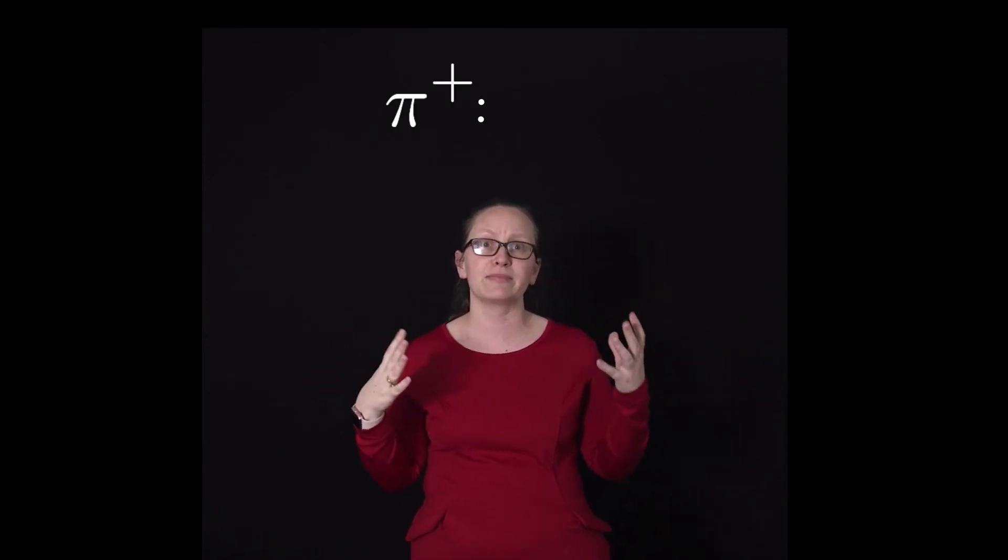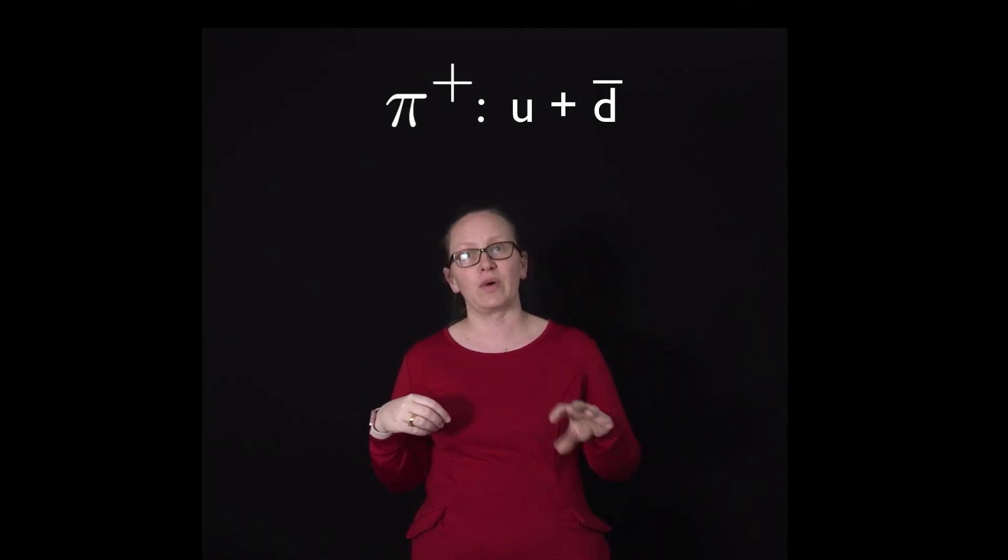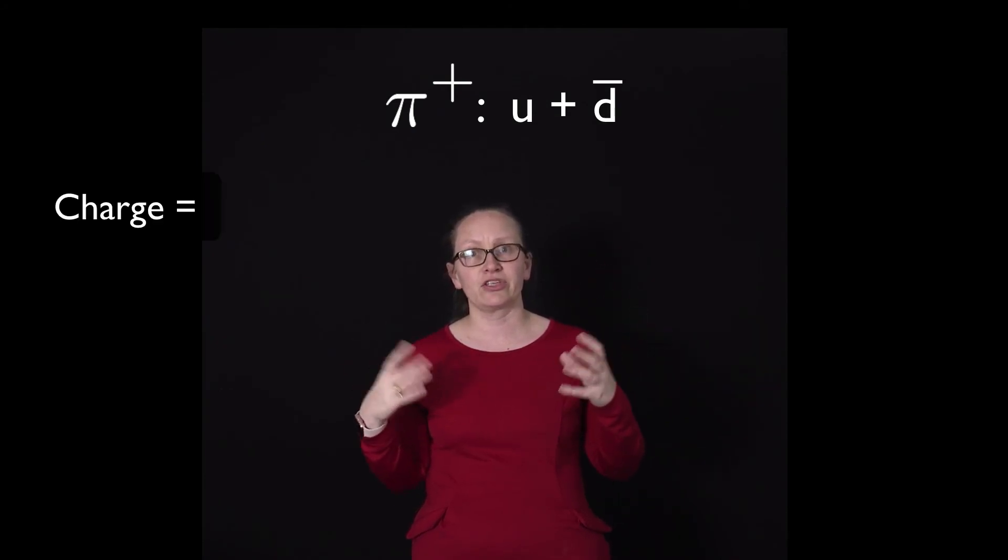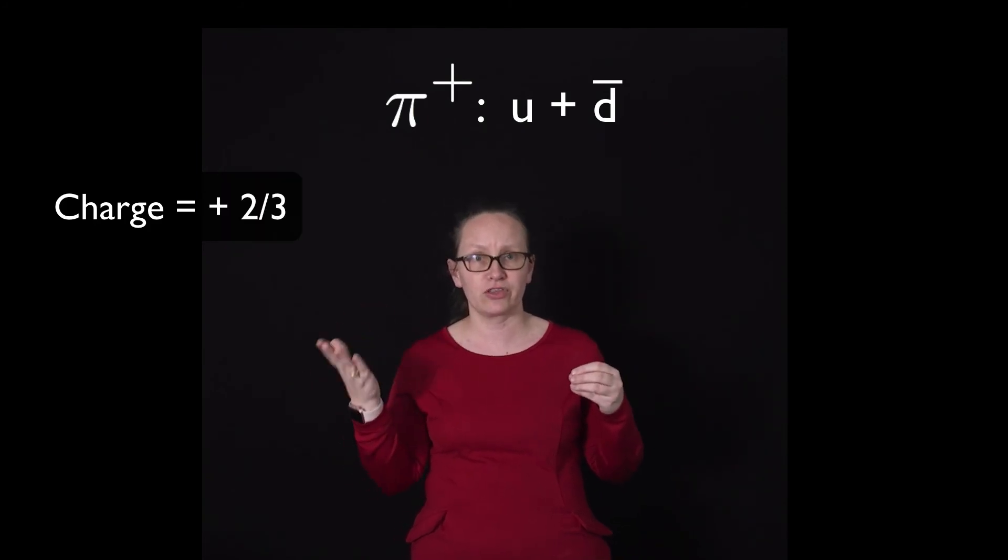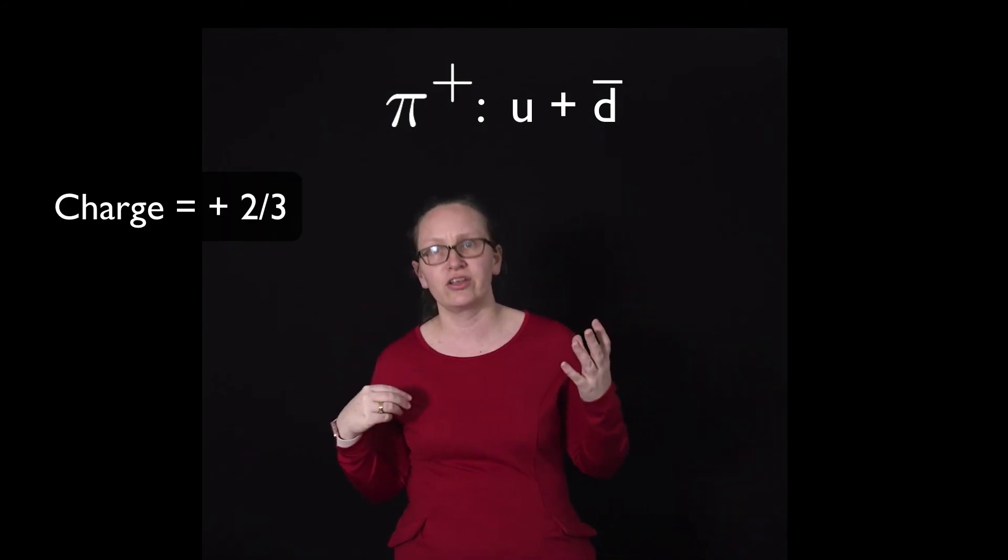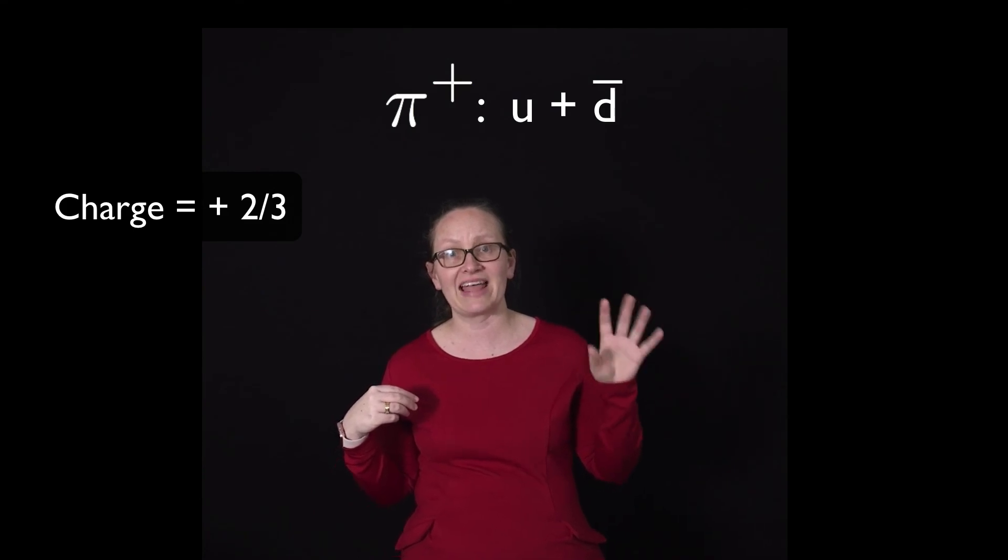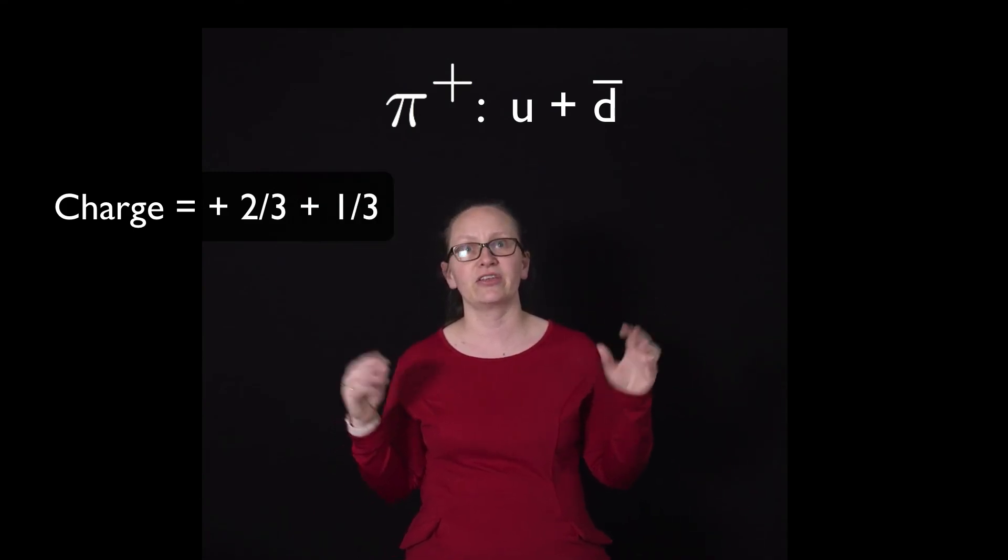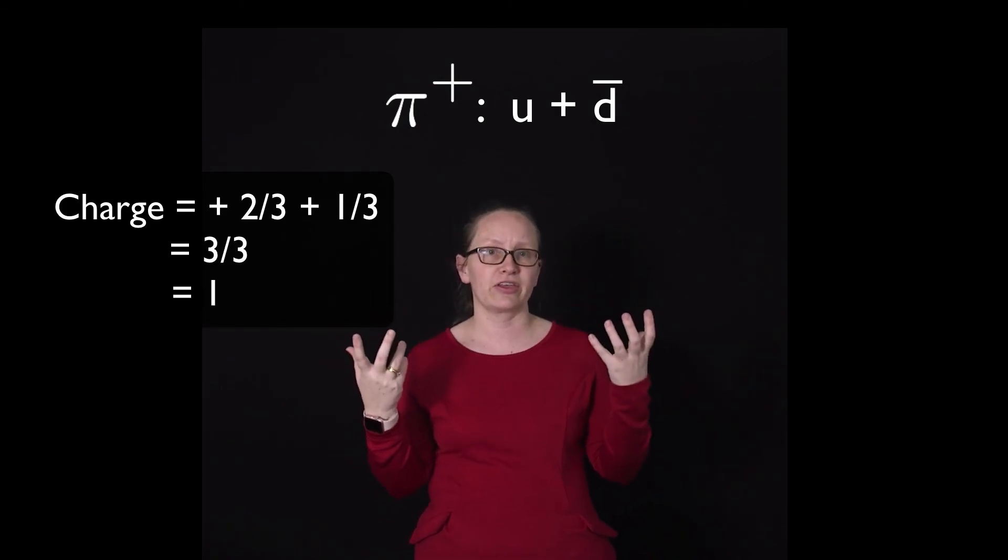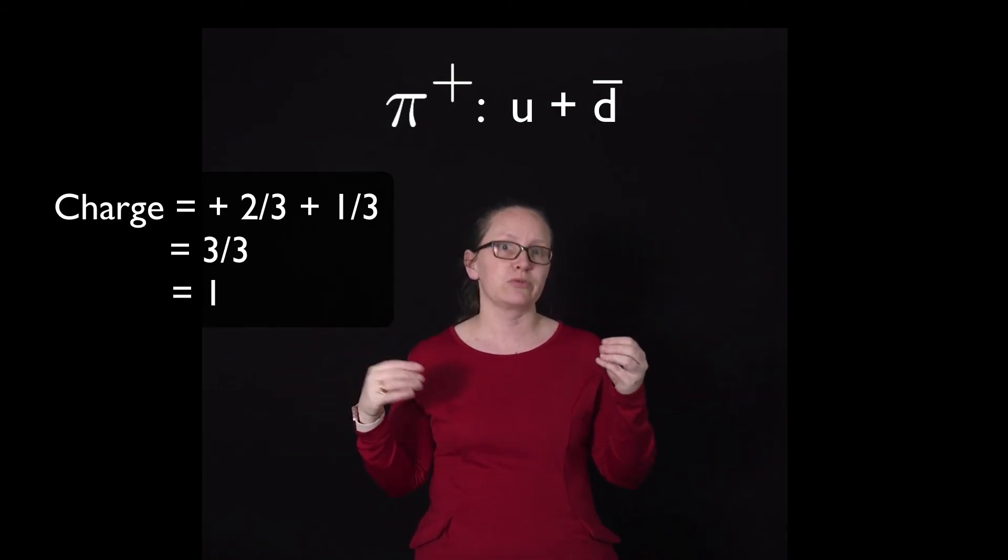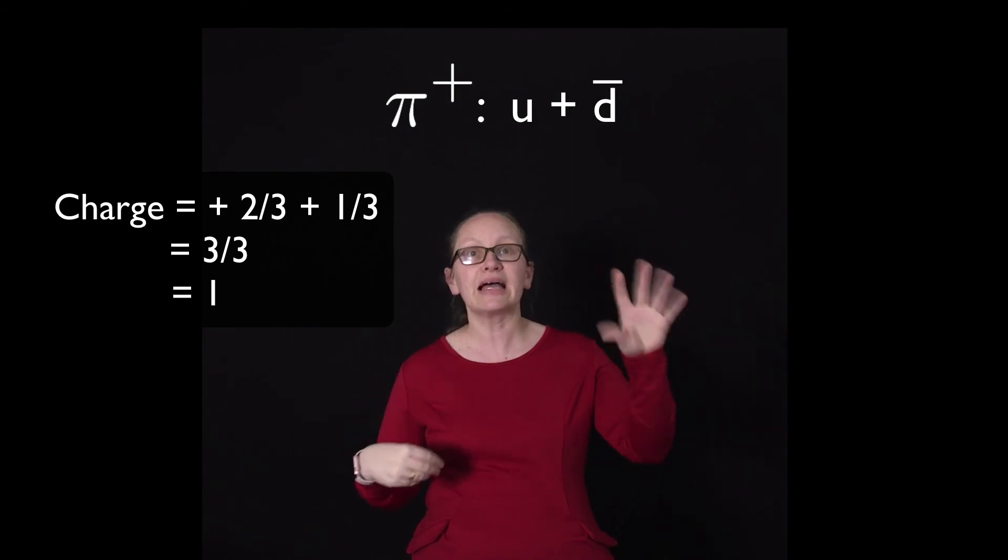An example of a meson that we can build from two quarks is the pi plus meson, which is built from an up quark and an anti-down quark. We can work out the charge in this case. Up has a charge of plus two-thirds, down has a charge of minus one-third, so an anti-down is plus one-third. The charge in this case is two-thirds plus one-third, which is one, which is why this is known as a pi plus meson.